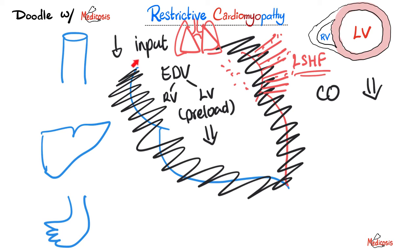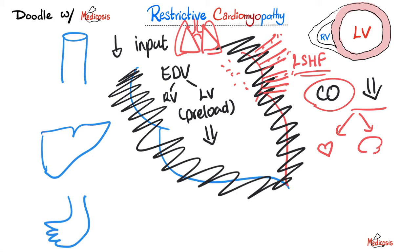Less input equals less output. Symptoms of low cardiac output: less blood supply to the heart gives angina. Less blood supply to the brain gives fatigue, dizziness, drowsiness, obtundedness, confusion, exercise intolerance, and ischemic stroke.